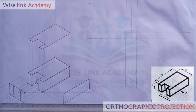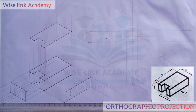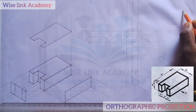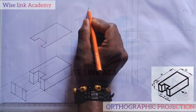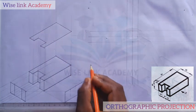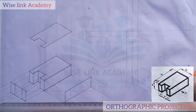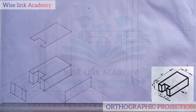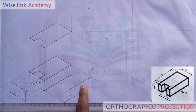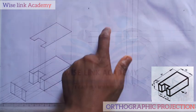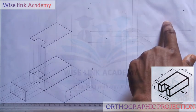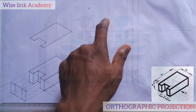So what we just did is called the orthographic axes. This is my first quadrant here, this is my second quadrant here, this is my third quadrant, and my fourth quadrant. Now listen please — I want to draw the first angle projection. So this is my first angle. This is my elevation here, so it will be up here at this point.